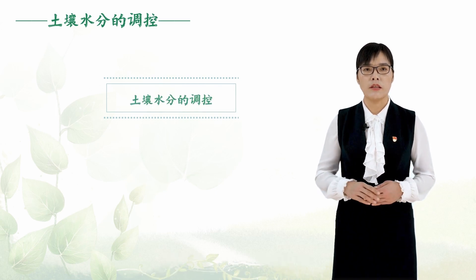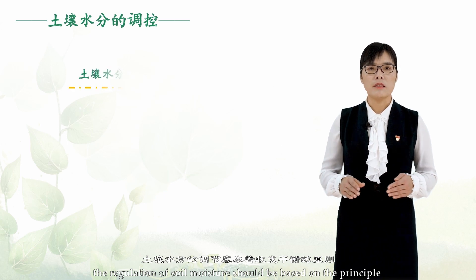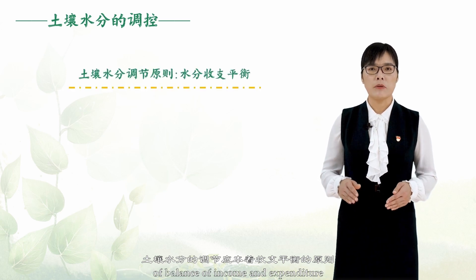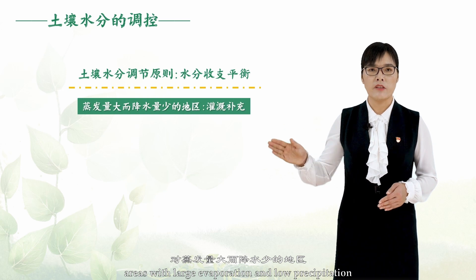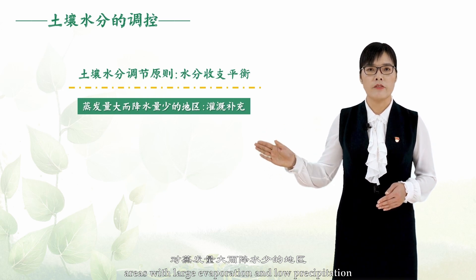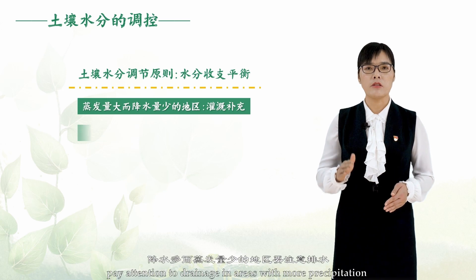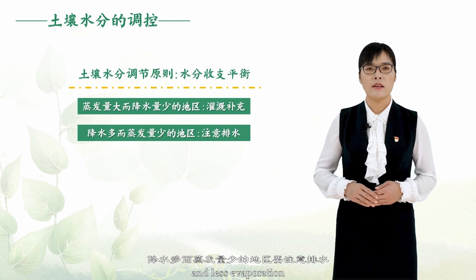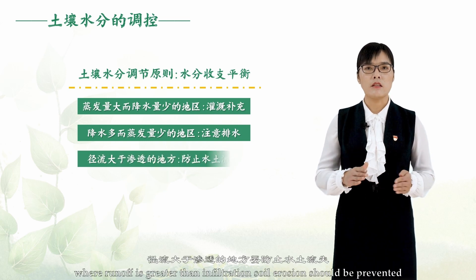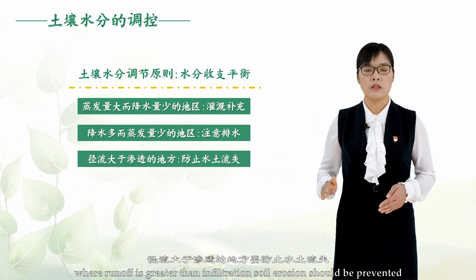The regulation of soil moisture should be based on the principle of balance of income and expenditure. Areas with large evaporation and low precipitation must be supplemented by irrigation. Pay attention to drainage in areas with more precipitation and less evaporation. Where runoff is greater than infiltration, soil erosion should be prevented.